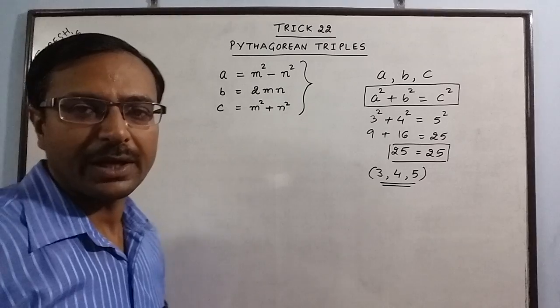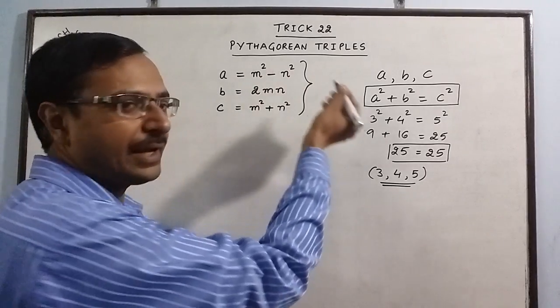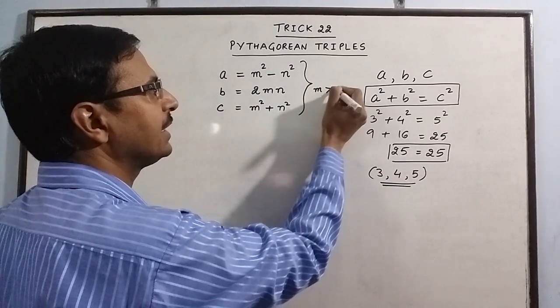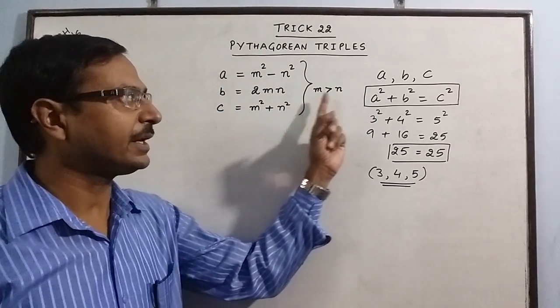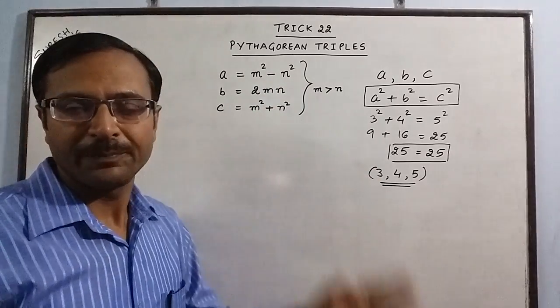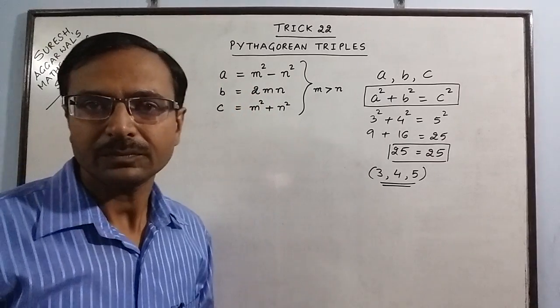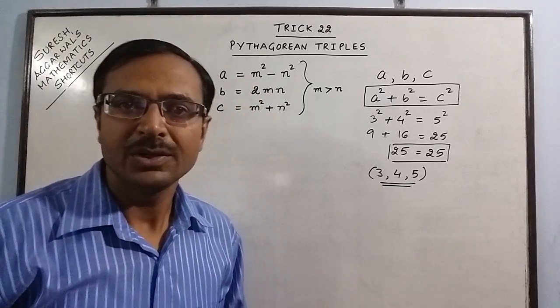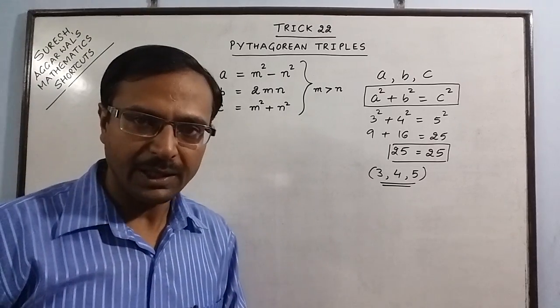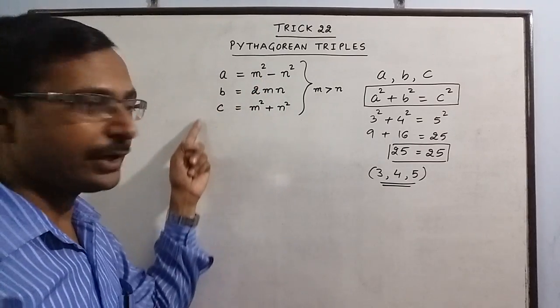Now, if you take any two natural numbers, M and N, where M is greater than N, obviously M has to be greater than N because M square minus N square will be positive. If M is smaller, then A will be negative. We don't want that to happen. So we are taking two numbers, two natural numbers M and N, where M is greater than N and then we will substitute those two numbers here to get the Pythagorean triplet.